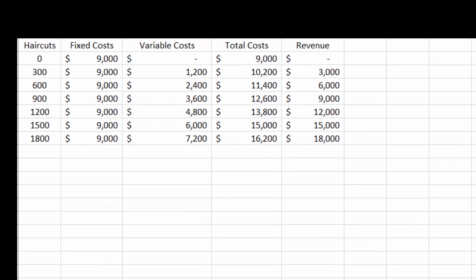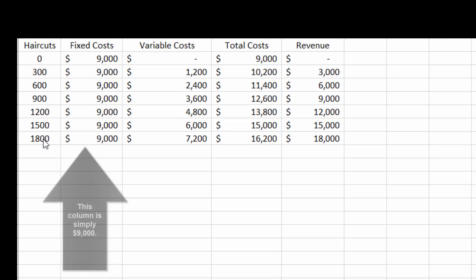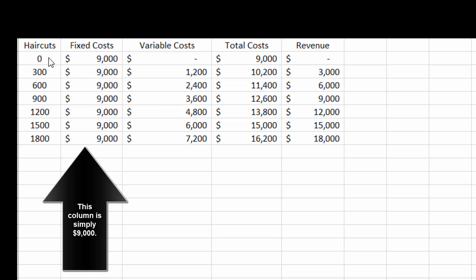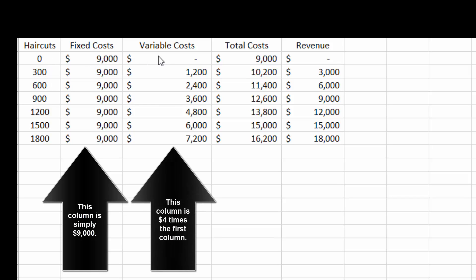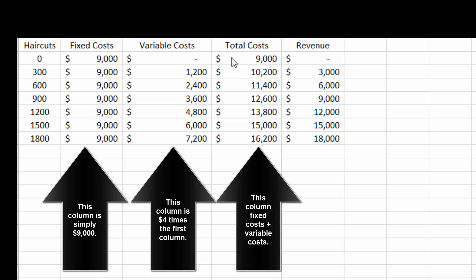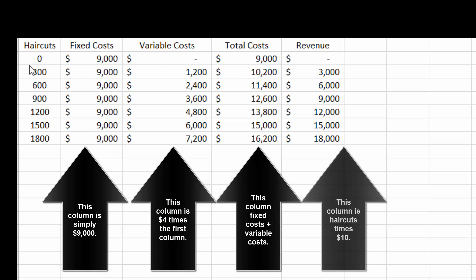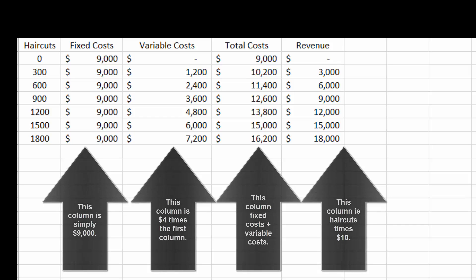The problem also asks us to make a chart. Here in Excel, the columns are: haircuts, fixed costs, variable costs, total costs, and revenue. At zero haircuts, fixed costs are $9,000, variable costs are zero, total costs are $9,000, and revenue is zero. At 300 haircuts, fixed costs are still $9,000, variable costs are $4 times 300, giving total cost of $10,200, and revenue is $10 times the number of haircuts. Let's create a chart that shows the break-even point at 1,500 haircuts.